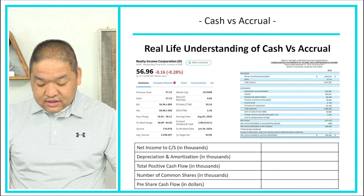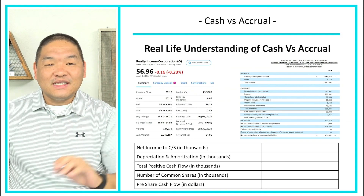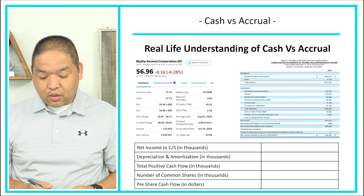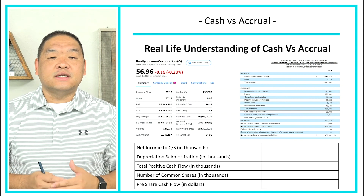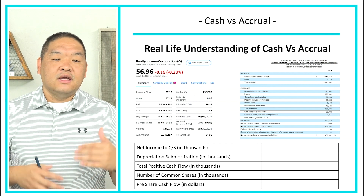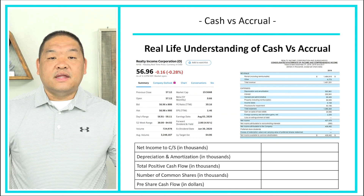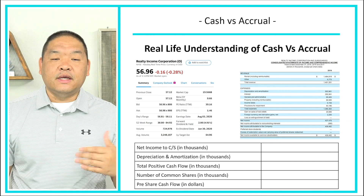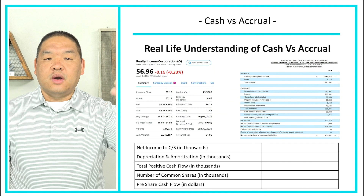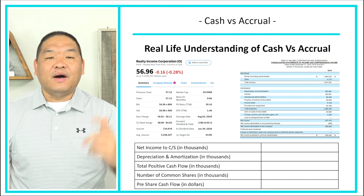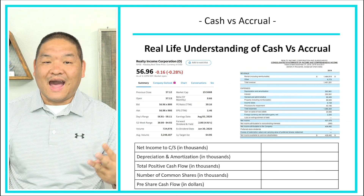Realty Income Corporation, ticker symbol O, is a REIT — a real estate investment trust. They take investments from investors, pool the money together, and buy commercial real estate throughout the United States. They then lease those properties to companies using something called a triple net lease. Triple net means the tenant — for example FedEx — pays rent and is also responsible for maintenance and property taxes.